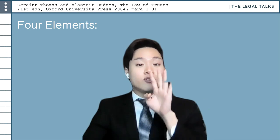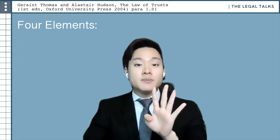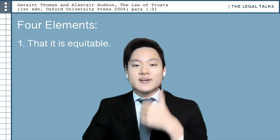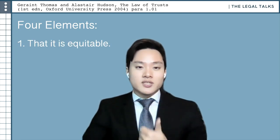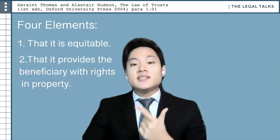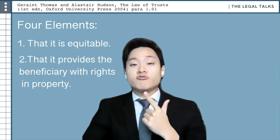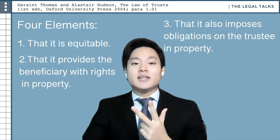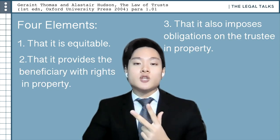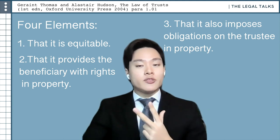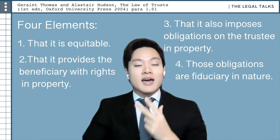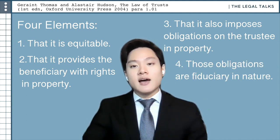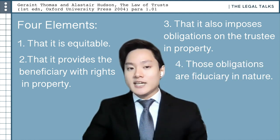In all, there are four significant elements to a trust. Firstly, that it is equitable. Secondly, that it provides a beneficiary with rights in property. Thirdly, that it also imposes obligations on the trustee. And fourthly, that those obligations are fiduciary in nature.